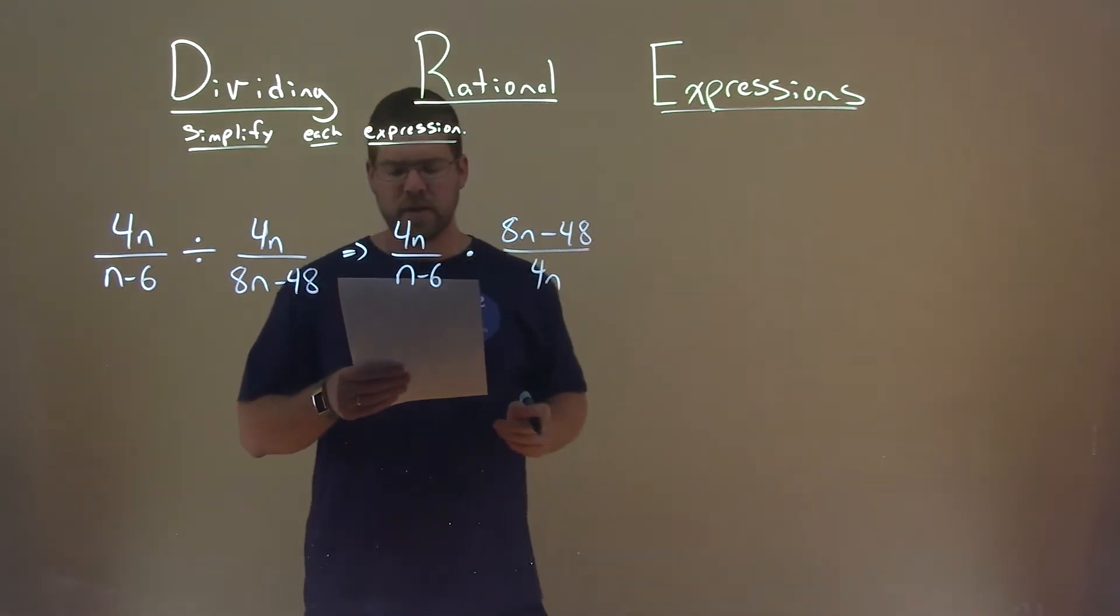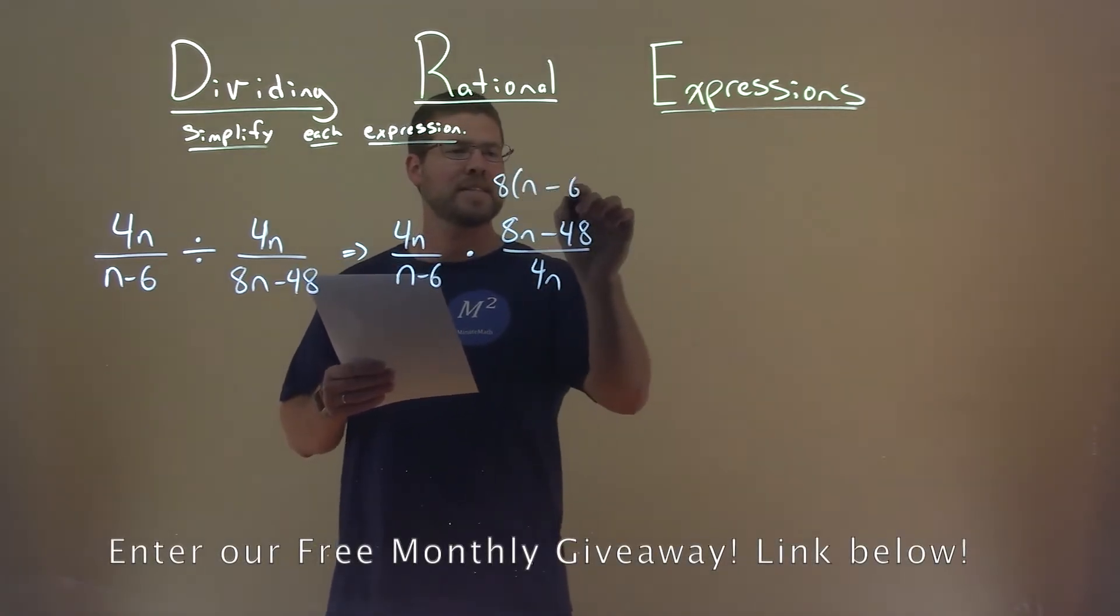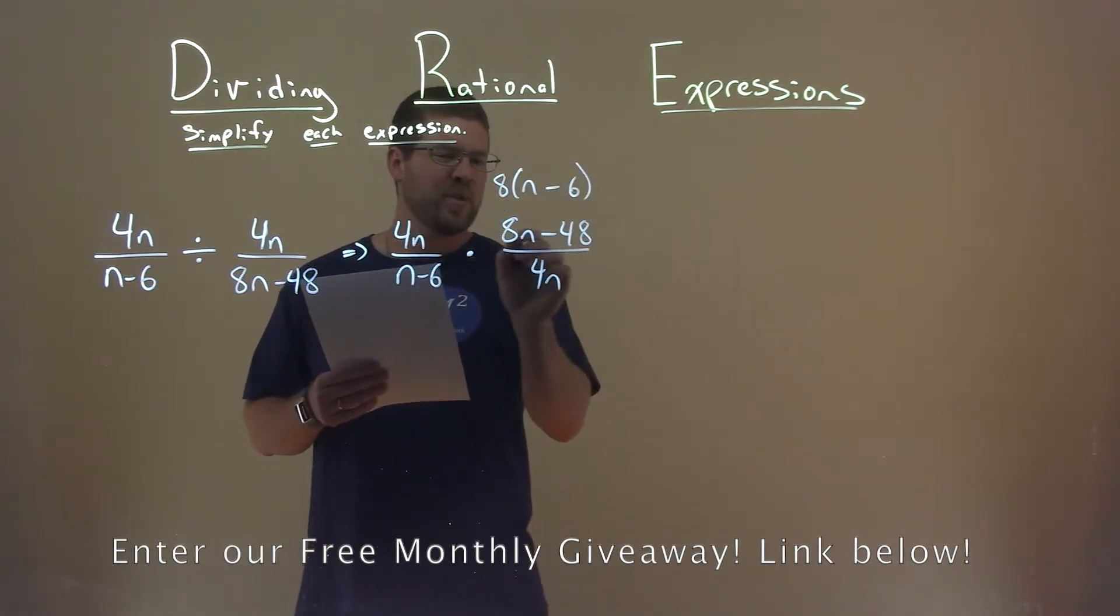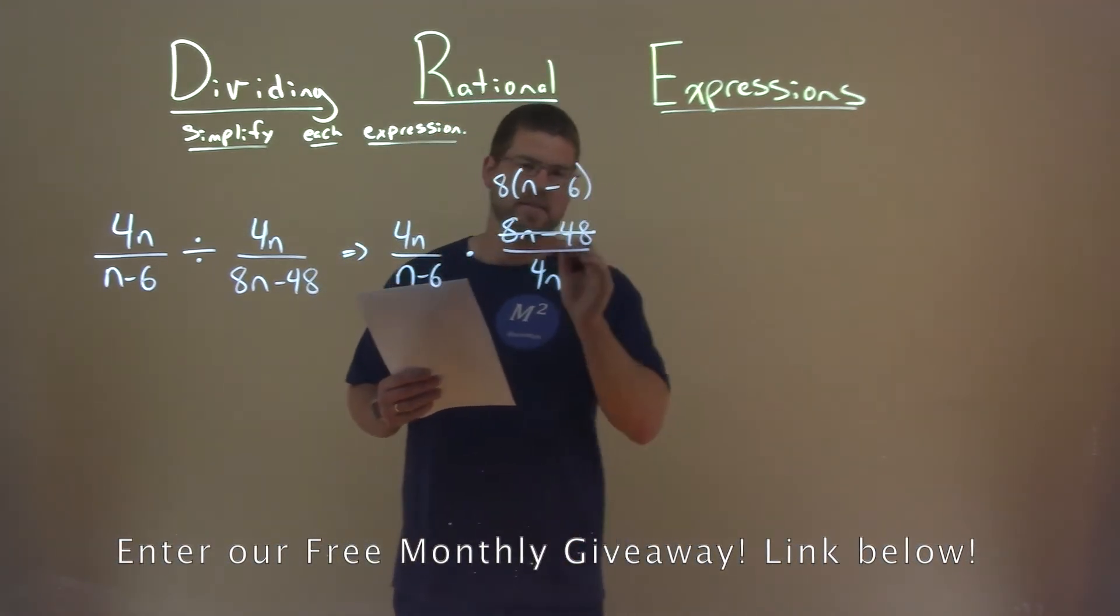All right, well, 8n minus 48, I see I can pull out an 8. So, I pull out an 8, I'm left with an n minus 6 here, and so we can rewrite that and say, hey, we have 8 times n minus 6 in that numerator.